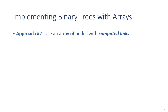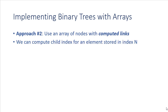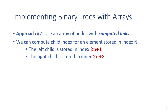Another approach is to use computed links, meaning if we have a node we can compute where its children are stored using that node's index. If an element is stored at index n, we store its left child at index 2n+1 and the right child at index 2n+2. At each level we're doubling the number of elements, giving us a unique index for each child based on the parent's index.